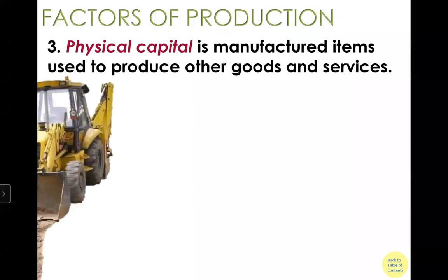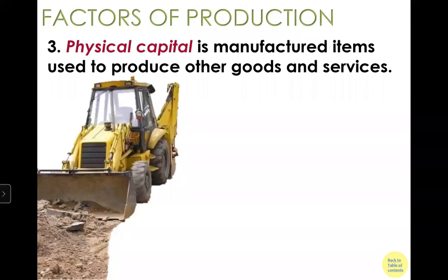The third important factor is physical capital. Physical capital is manufactured items that will be used to produce other goods and services. Think about tractors in the background, or the machines we use in the factory. So this is the third factor.